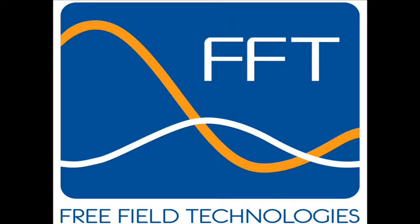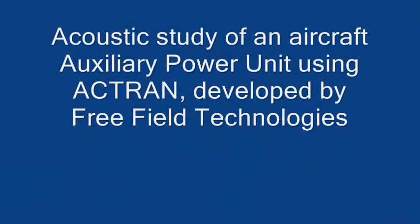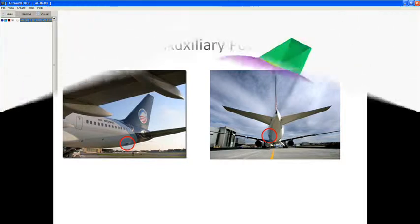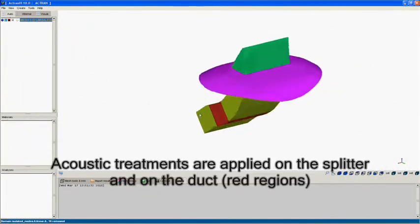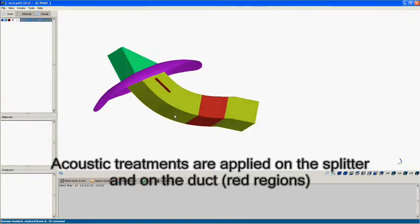ACTRAN is a finite element-based software for simulating acoustic, aeroacoustic, and vibroacoustic transmission. This video shows the highlights of an ACTRAN analysis of noise transmission through the exhaust duct of an aircraft APU, including the effect of sound treatments.